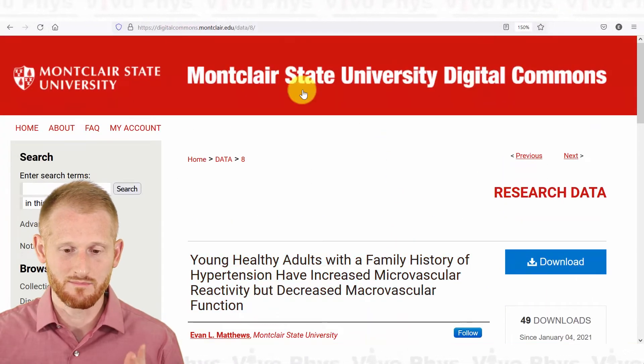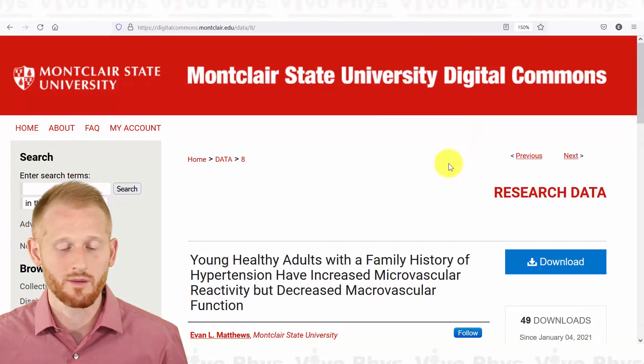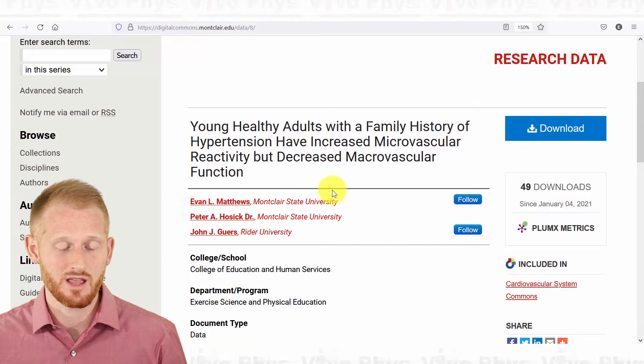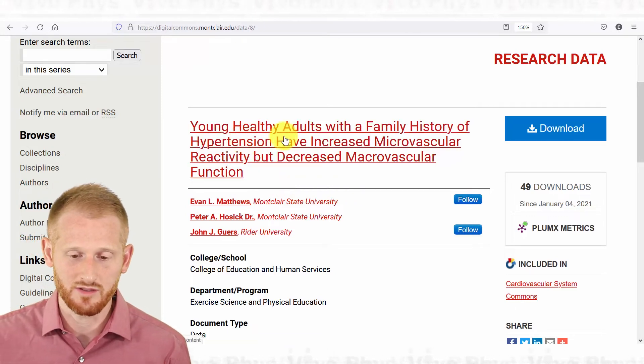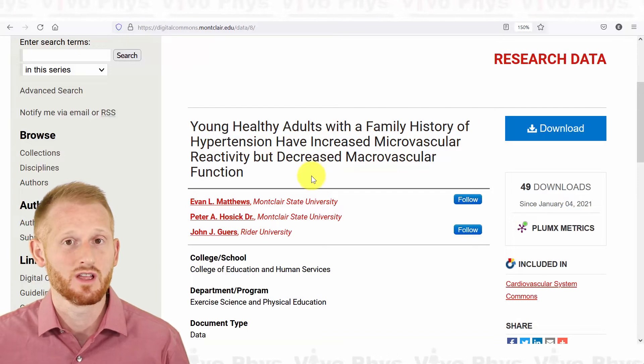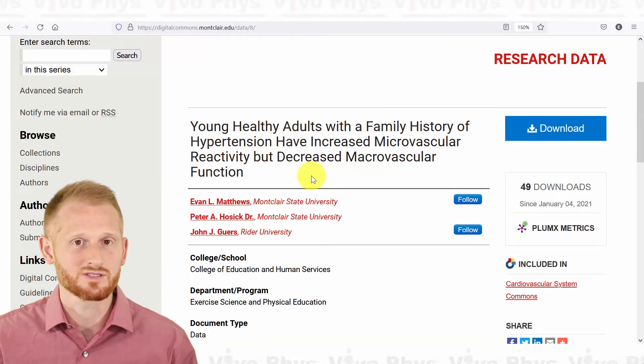it's going to bring you to this page here. This is the Montclair State University Digital Commons, where you can find the data set for this paper. The paper was titled Young Healthy Adults with a Family History of Hypertension that Increased Microvascular Reactivity but Decreased Macrovascular Function.